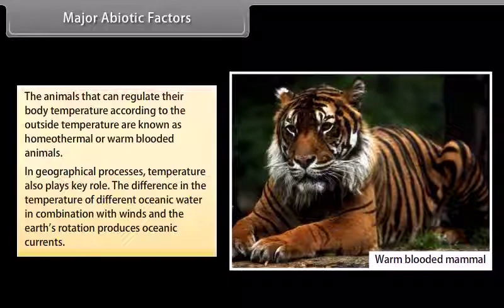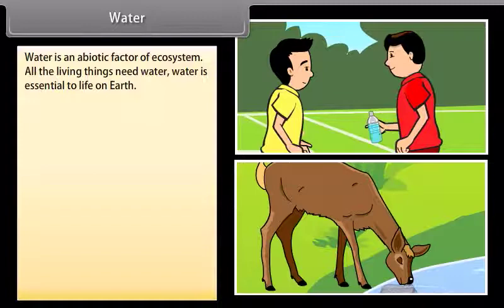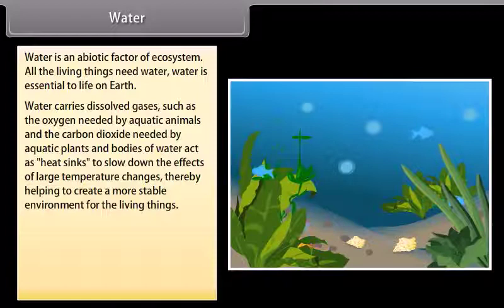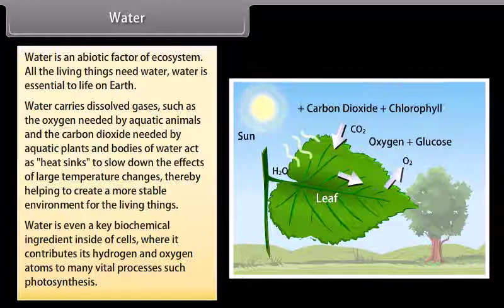Water: Water is an abiotic factor of the ecosystem — all living things need water. Water carries dissolved gases such as the oxygen needed by aquatic animals and the carbon dioxide needed by aquatic plants. Bodies of water act as heat sinks to slow down the effects of large temperature changes, helping to create a more stable environment. Water is also a key biochemical ingredient inside cells, contributing hydrogen and oxygen atoms to vital processes such as photosynthesis.